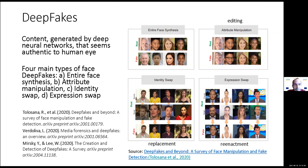Typically, deepfakes are used to refer to content that's generated by deep neural networks and seems authentic to the human eye. In general, it started from a specific type of generated content some years ago, but nowadays people use it in a much broader sense and refer to almost any kind of synthetic content, as long as part of it is generated by deep neural networks.